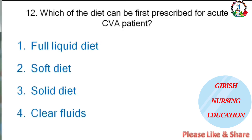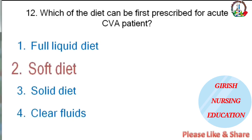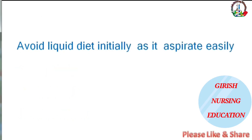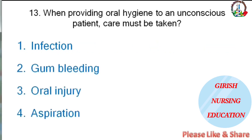Which diet can first be prescribed for an acute CVA patient — full liquid diet, soft diet, solid diet, or clear foods? The correct answer is soft diet. Avoid liquid diet initially, as it can be easily aspirated in CVA cases.